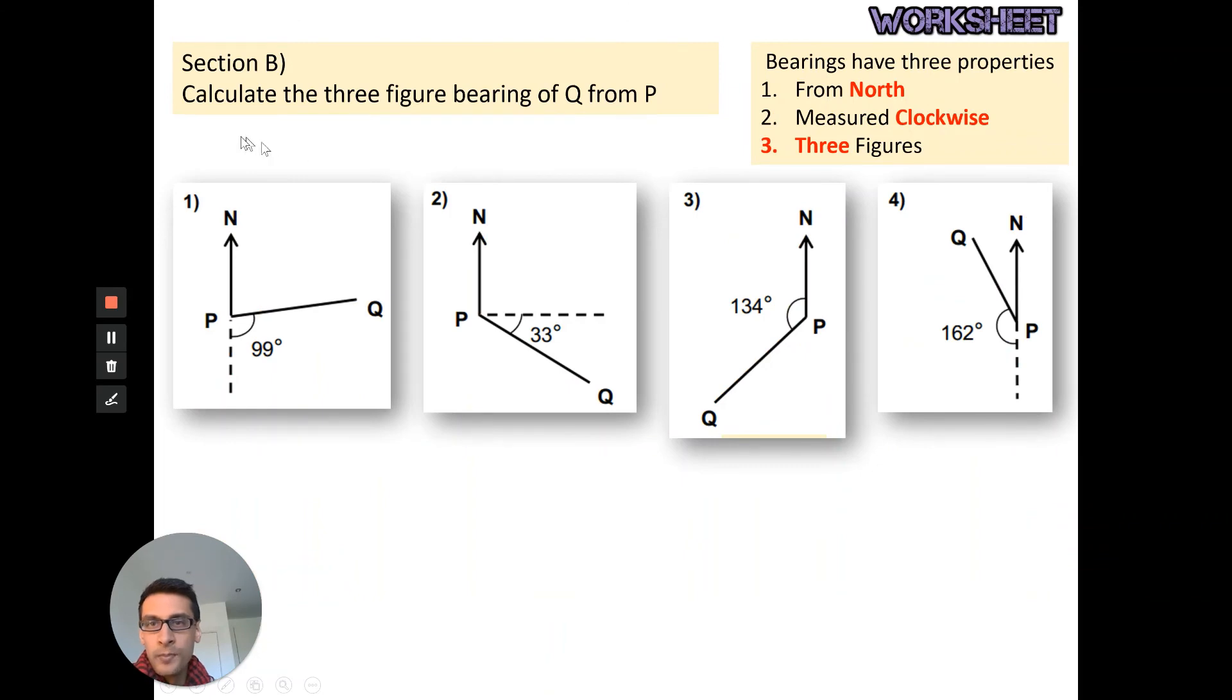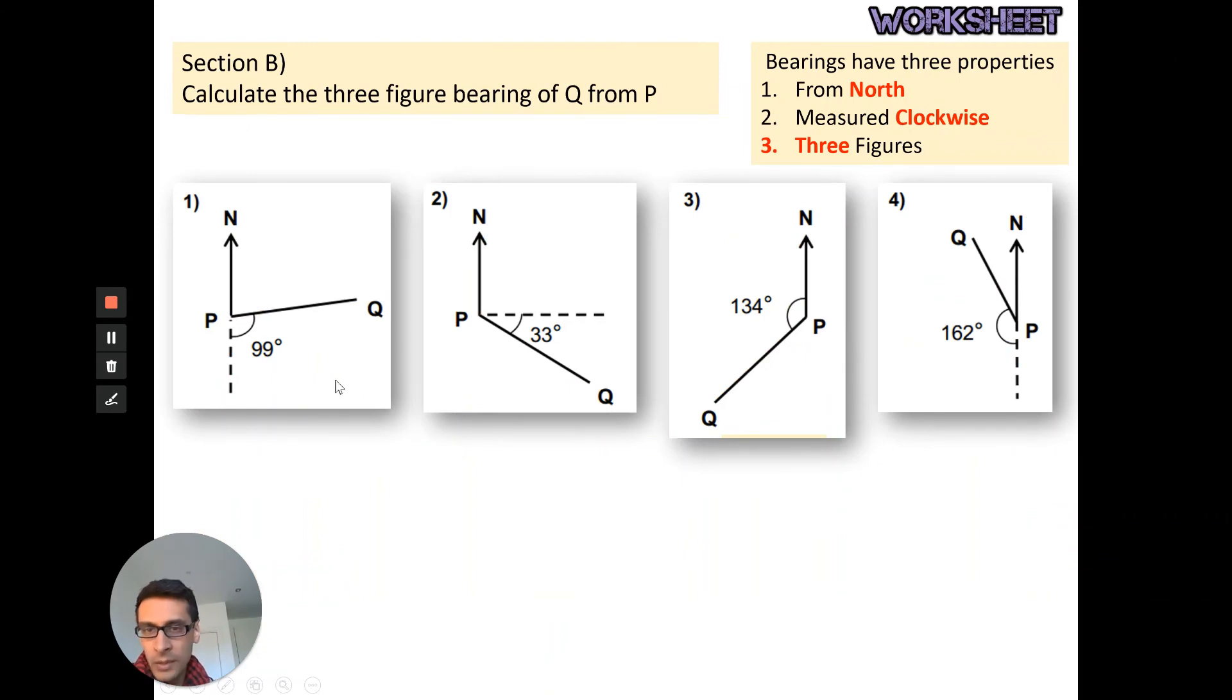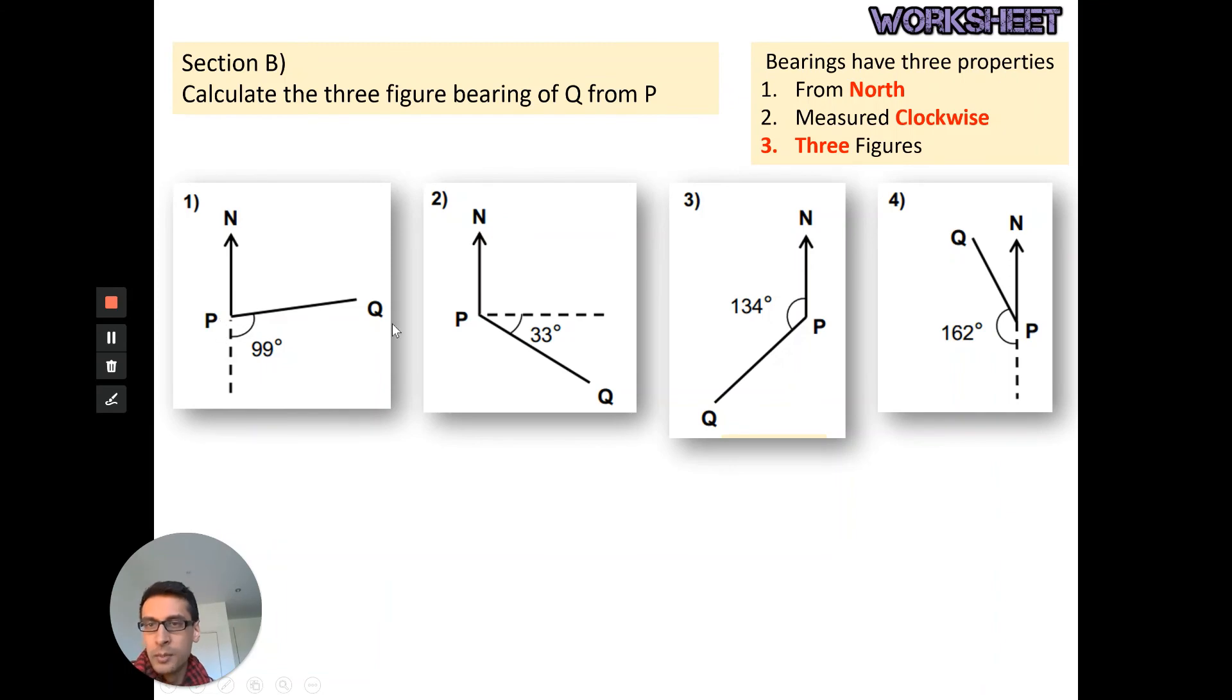Now in this case, slightly more abstract, we're just working out points P and Q. I want to calculate the three figure bearings of Q from P in each case. Work them out and then play the video. Okay, so you should have 081, 111, 123, 226, and 342. Mark those and we'll continue now.